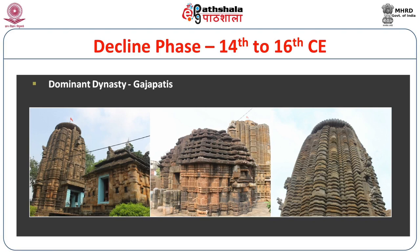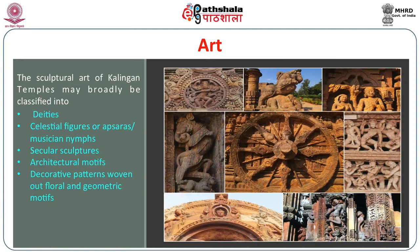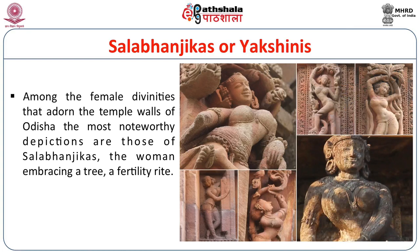During the decline phase, the dominant dynasty were the Gajapathis. The sculptural art of the Kalingan temples may broadly be classified into: deities, celestial figures or apsaras, musicians, nymphs, secular sculptures, architectural motifs, and decorative patterns like floral and geometric motifs.